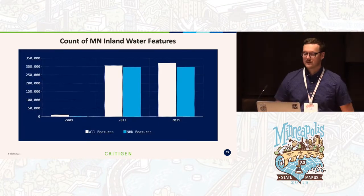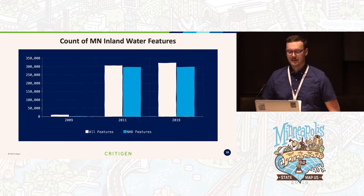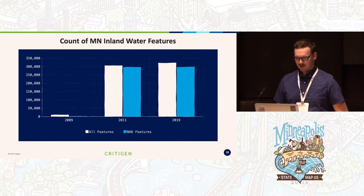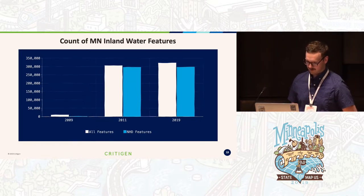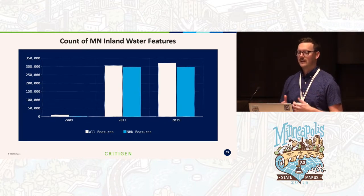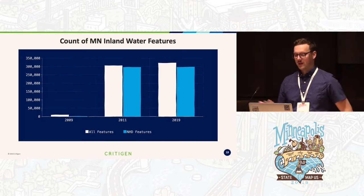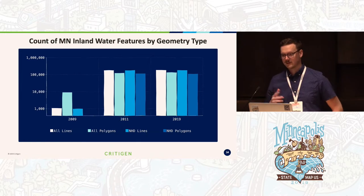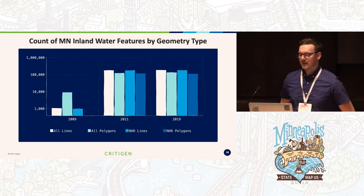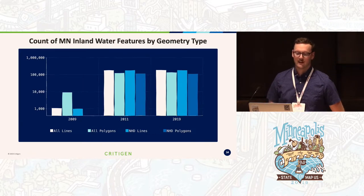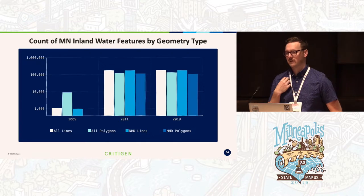This graph shows our three different years — 2009, 2011, 2019 — showing all features versus NHD features for inland water. NHD represents a huge portion of the data once it's uploaded in 2011 and 2019. There's very little change between 2011 and 2019, which is what we were looking for. We wanted to capture the bulk import between 2009 and 2011 and analyze what's happening in those last two time steps. About 300,000 features were added, mostly from NHD. The second chart breaks things down by geometry type using a logarithmic scale, clearly showing the huge jump in features between 2009 and 2011.